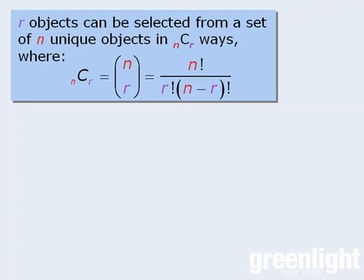Now while it's perfectly fine to memorize this formula, there is a faster way to calculate combinations. To see how the faster technique works, let's first calculate 8 choose 3. Here, N equals 8, and R equals 3.